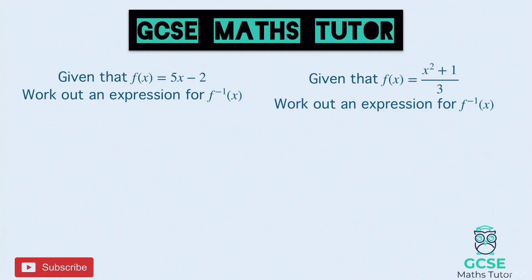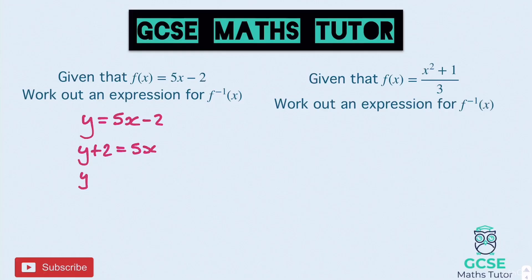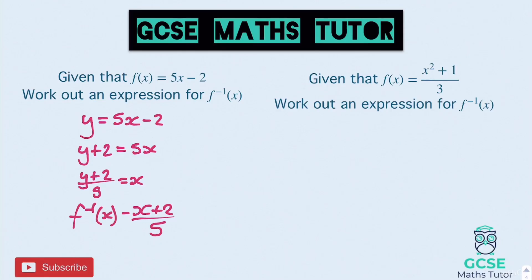Here's some for you to have a go at — pause the video there and we'll go over it in a sec. For the first one, swap that for y equals, so y equals 5x minus 2. Rearrange it: y plus 2 equals 5x, divide by 5, y plus 2 over 5 equals x. Then swap your x and y, so x plus 2 over 5 equals the inverse function of f. So f minus 1 of x equals x plus 2 divided by 5 — there's our final answer.